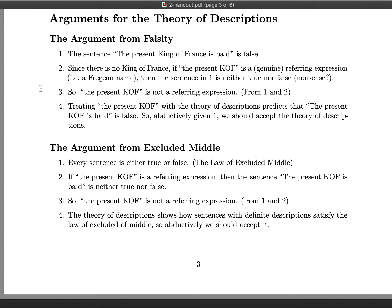The second argument is the argument from excluded middle. The first premise is what is called in logic the law of excluded middle, which says every single sentence is either true or false — it's either one of the two truth values. What this law says is that there are no truth value gaps; there can be no sentences which are neither true nor false.